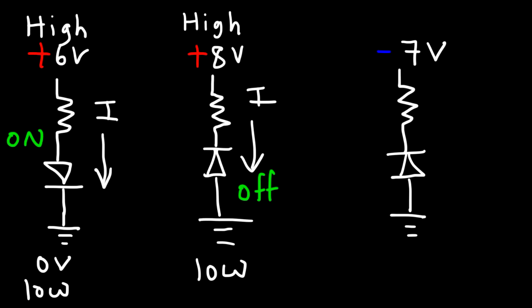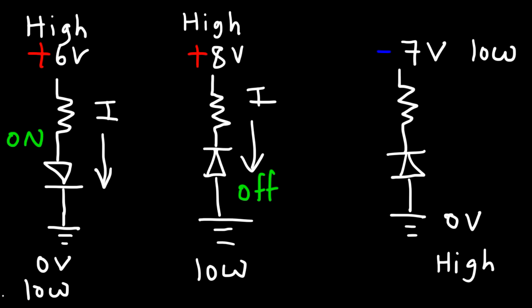For the last example with negative 7 volts, the ground is at 0 volts and the source is at negative 7 volts. Since negative 7 is lower than 0, the negative 7 point is at low potential and the ground at 0 volts is at higher potential. So current flows from the 0-volt ground toward the negative 7-volt terminal — and this is in the direction of the arrow, so the circuit is on. That's a quick and simple way to determine if the diode is conducting or not.